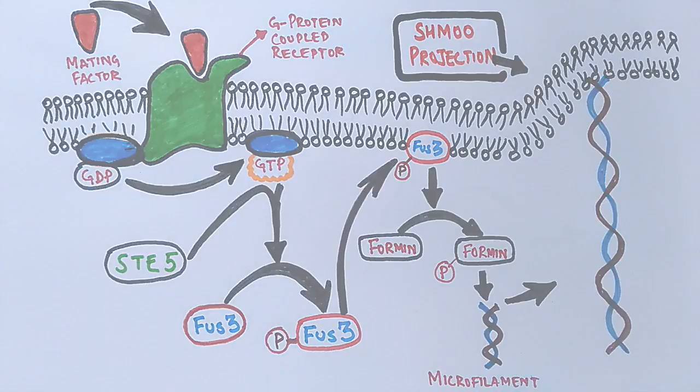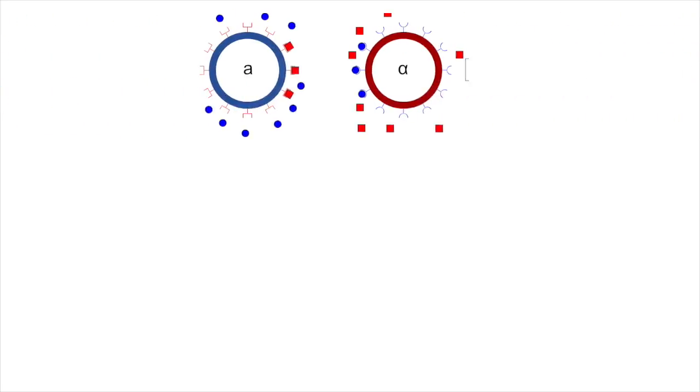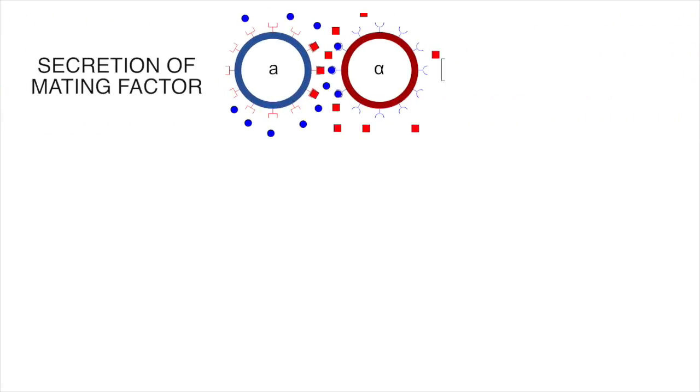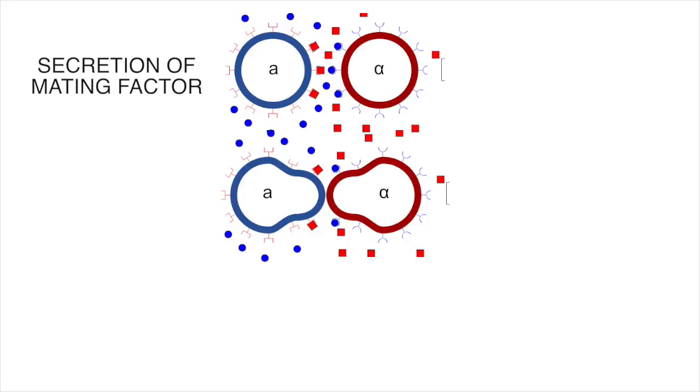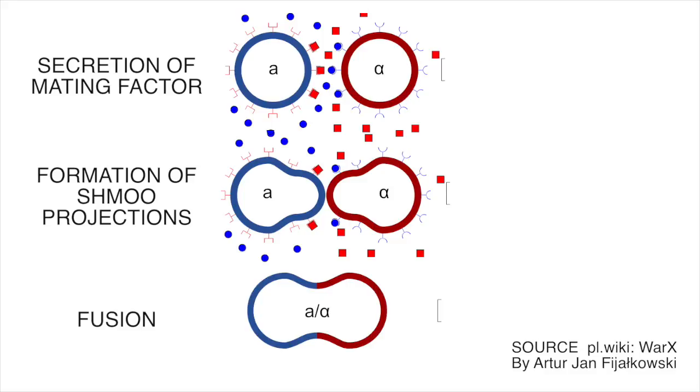As you can see in this diagram, first the two opposite haploid yeast cells come together and secrete mating factor, and then after that they form the respective shmoo projections. It's all due to these shmoo projections that the yeast cells are able to fuse for mating purposes.